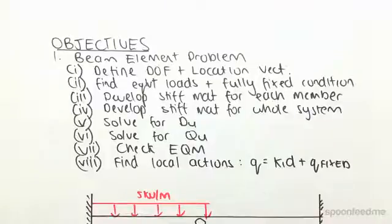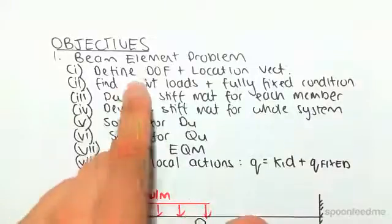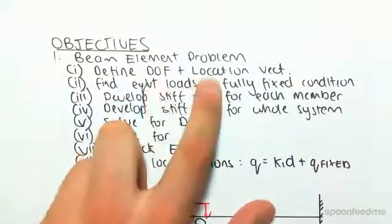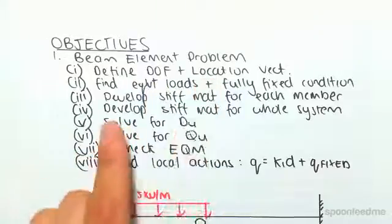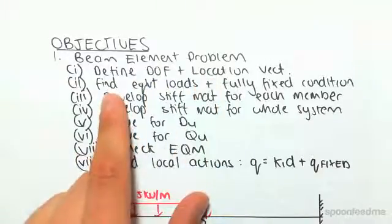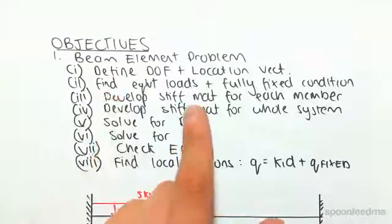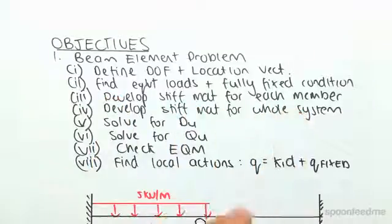The process is very similar to the past videos we've done. We're going to be defining a degree of freedom and then a location vector. The additional part here, which is different to the beam element in the previous example, is we need to find equivalent loads and fully fixed conditions. We're going to see what that means in a second, but it's the only difference from the previous problem.